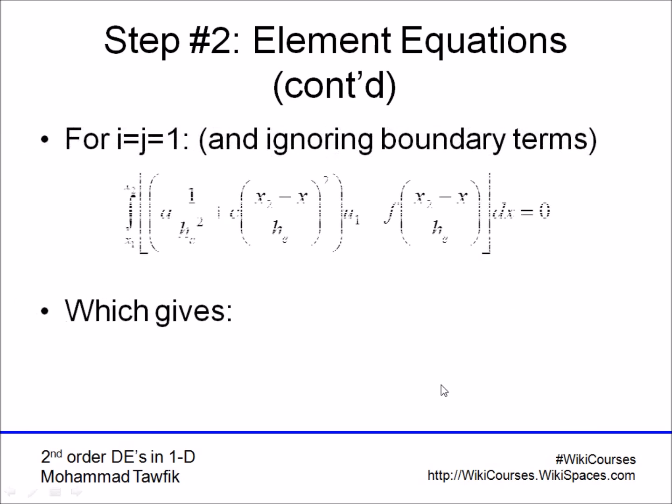For example, let's just perform this integration using i equals 1 and j equals 1. Performing this integration, we will substitute the first interpolation function in both terms, in all terms, and this integration will result in a constant value multiplied by the value of u1 and another constant value multiplied by u1 as well. And here you get the excitation term.